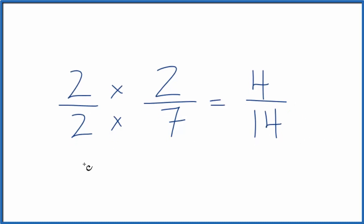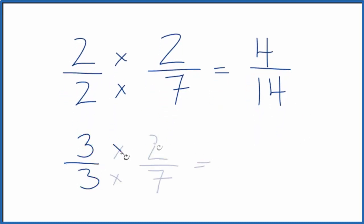Let's do two more. How about 3 over 3? 3 times 2 is 6. 3 times 7 is 21. This is another equivalent fraction to 2 sevenths. And again, 3 divided by 3, that's 1. We're multiplying by 1, and we're not changing anything.